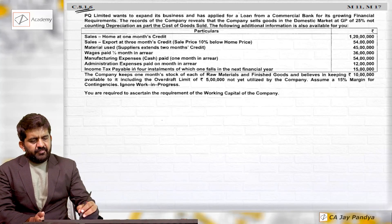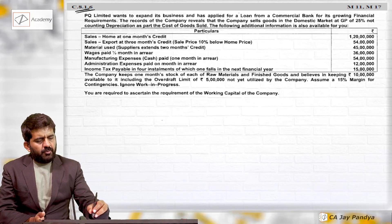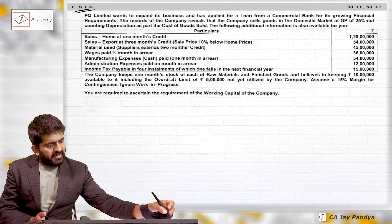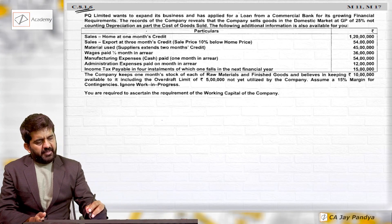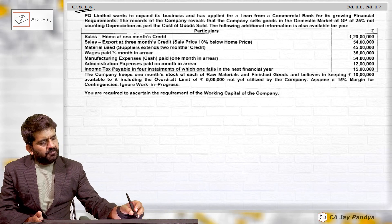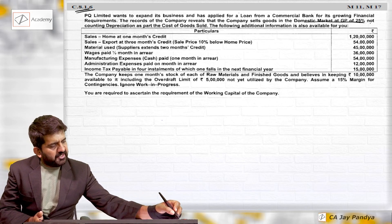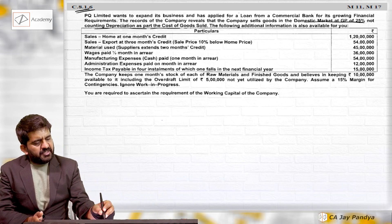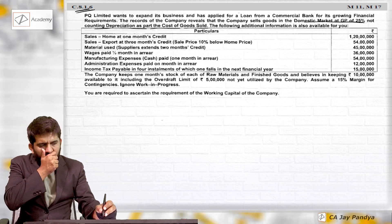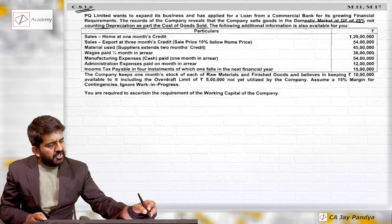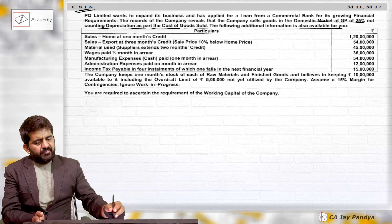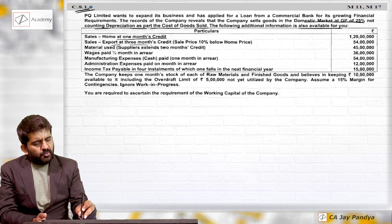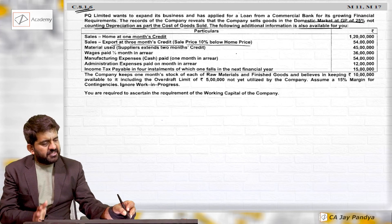T8.1.6 — PQ Limited wants to expand its business and has applied for a loan from a commercial bank for its growing financial requirement. The company sells goods in the domestic market at a GP of 25 percent, not counting depreciation as part of cost of goods sold. The following additional information is available: home sales at one month credit, export sales at three months credit, and export sales price is 10 percent below home price.